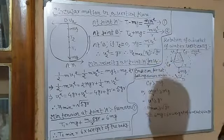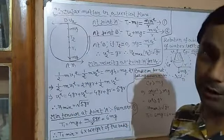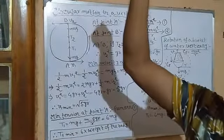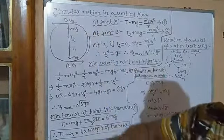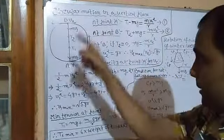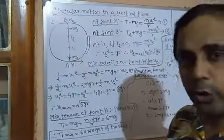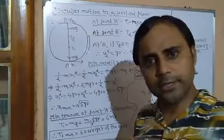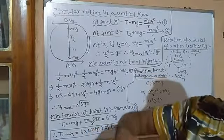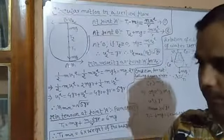Now, assume at point B the tension T2 equals zero momentarily — this is not like a vertical throw where velocity becomes zero. Since it is circular motion, velocity gradually decreases but cannot be zero; it will be minimum. The object is not attending maximum vertical height and coming down — it is moving in a circular path. So the velocity decreases and increases again upon returning to the bottom.